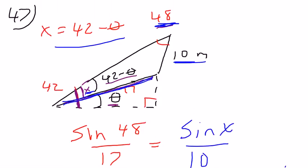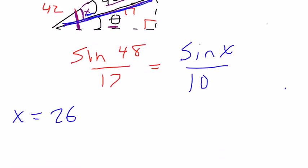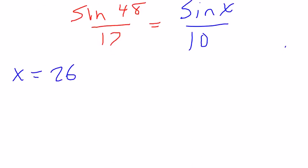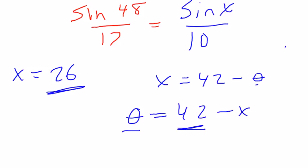And then I have this formula up here that x equals 42 minus the angle. So I could manipulate this equation. To get this equal to theta, I could add theta to both sides and subtract x from both sides. So theta would be 42 minus the angle I just found. 16 degrees.